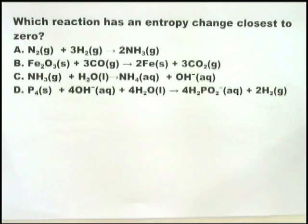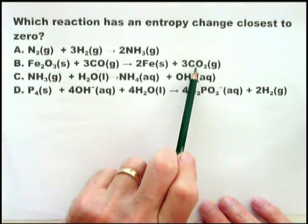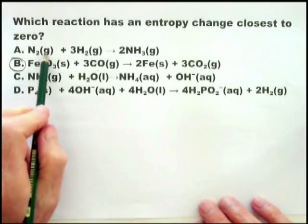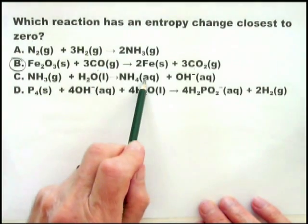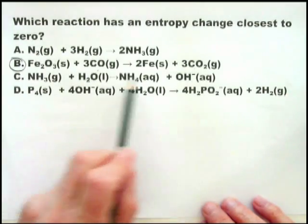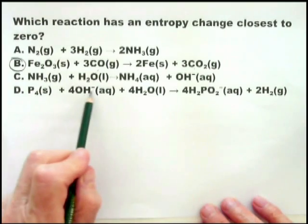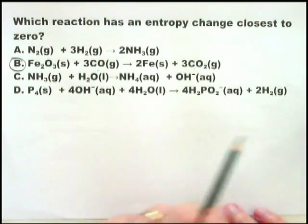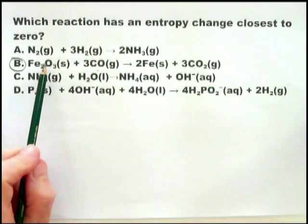We want to see the same number of gas molecules on the left as on the right. Here you have B: three molecules of carbon monoxide on the left and three molecules of carbon dioxide on the right — that is it. Checking the others: one option is an increase in entropy, another has gas going to a liquid — a decrease in entropy — and the last has solid, aqueous, liquid, aqueous, gas — an increase in entropy. So very quickly you can see that B is the one with entropy change closest to zero.